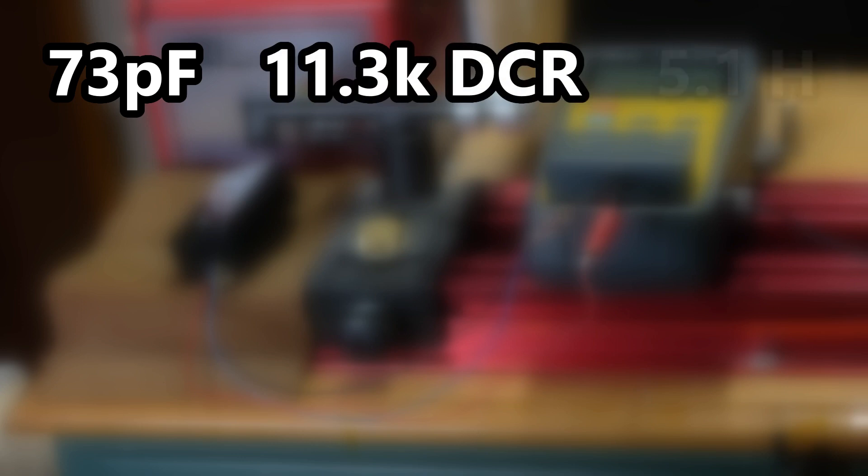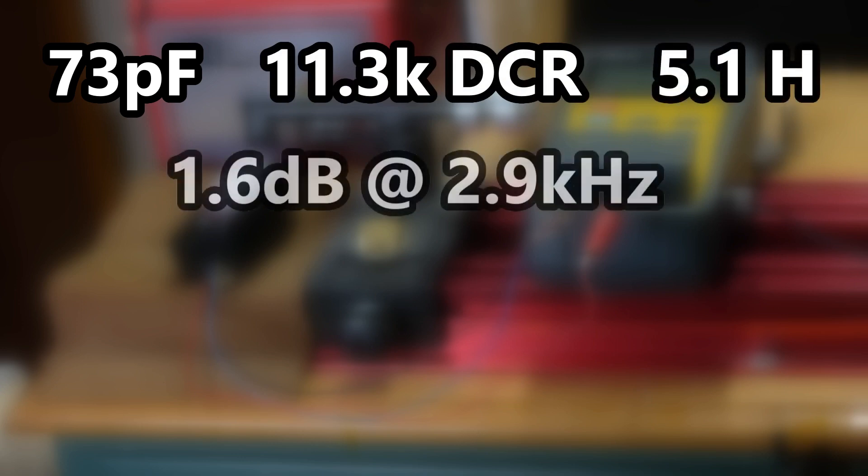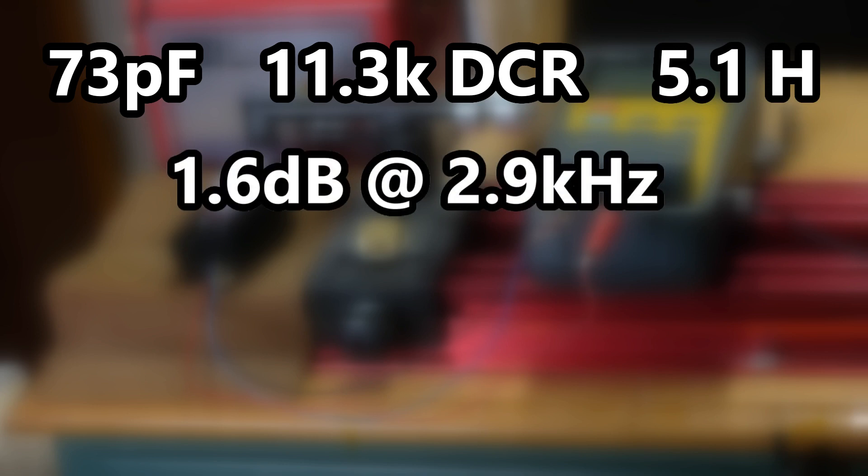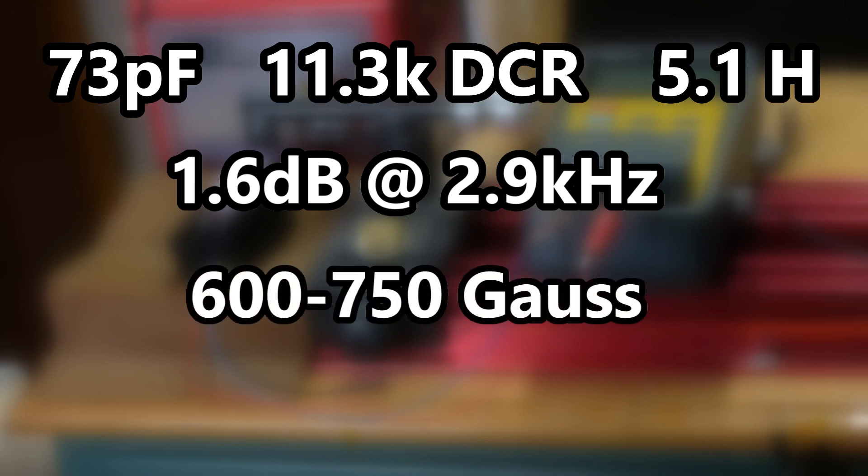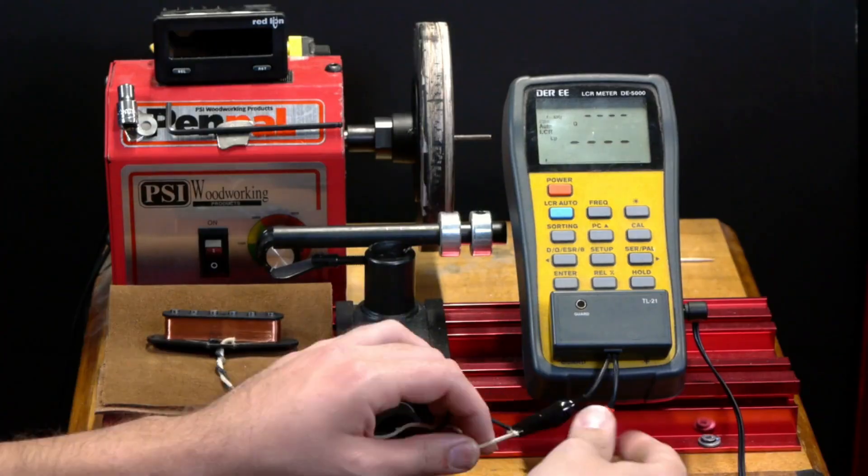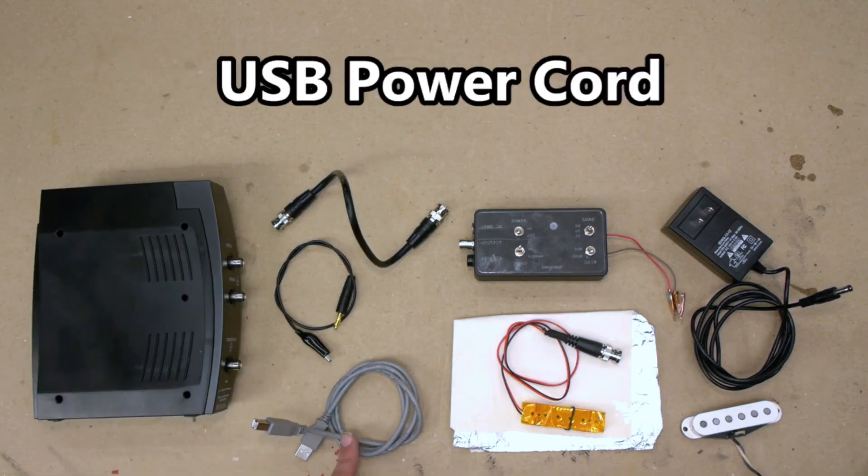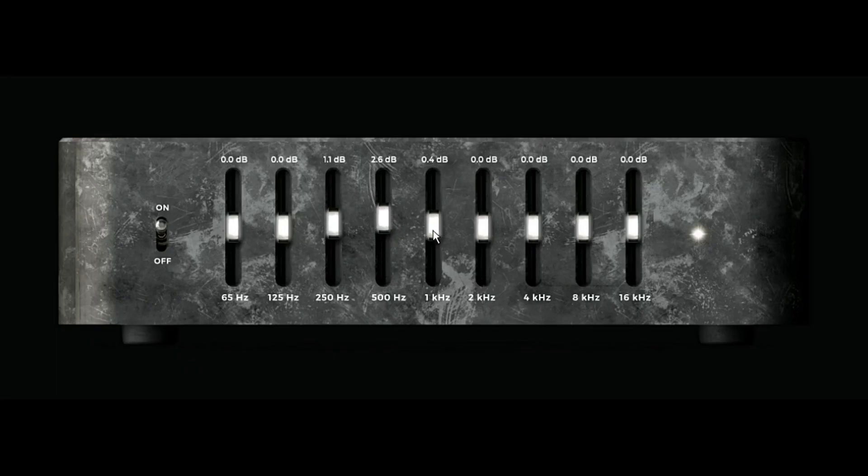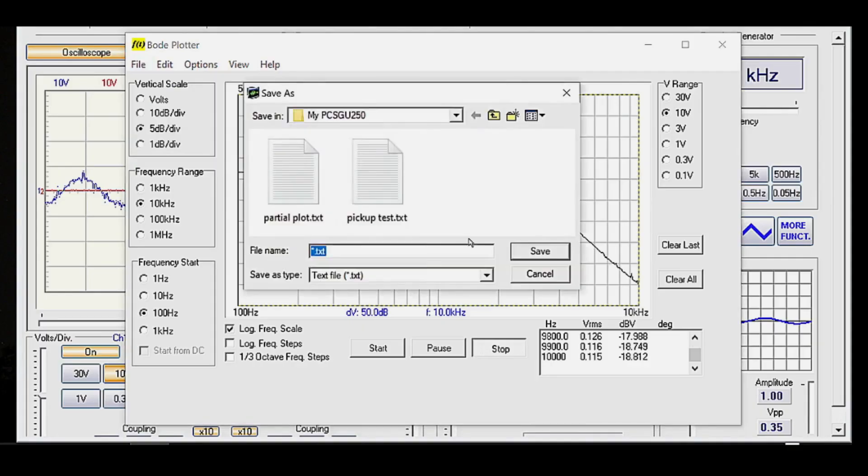The final reading is 73 picofarads capacitance, 11.3k resistance, 5.1 henrys inductance, and a resonant peak of 1.6 decibels at 2.9 kilohertz. I'm unsure of the magnet type, but the magnetic strength on top of the pole pieces was around 600 to 750 gauss. To see exactly how I took these measurements in great detail, check the description box for a link to my video tutorial on testing pickups.